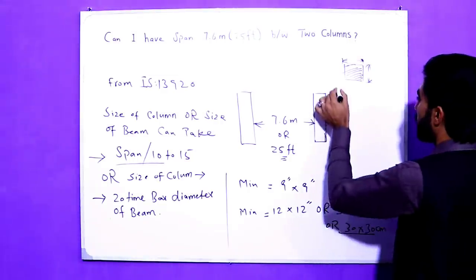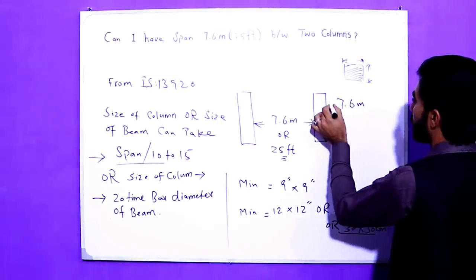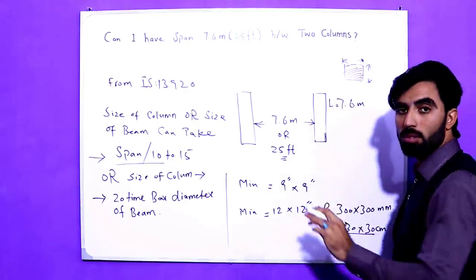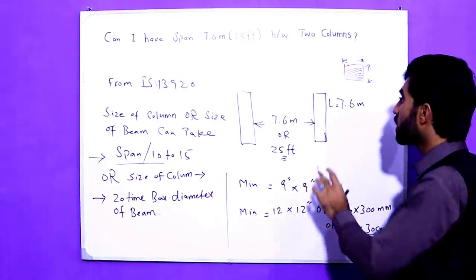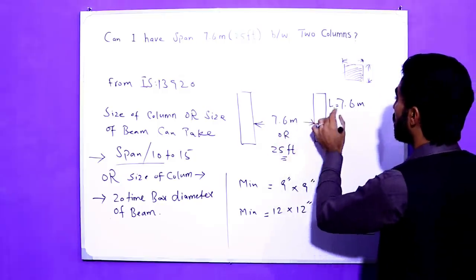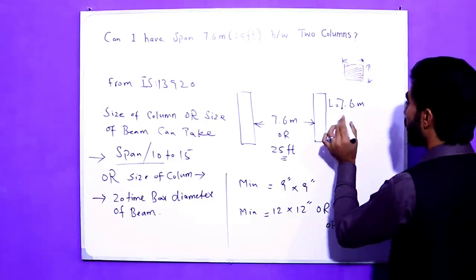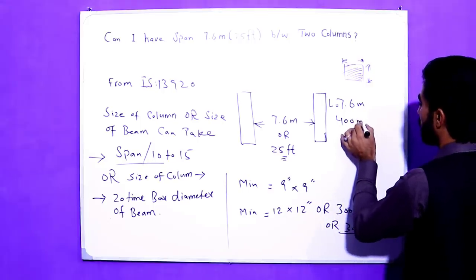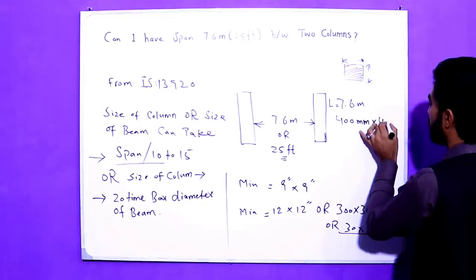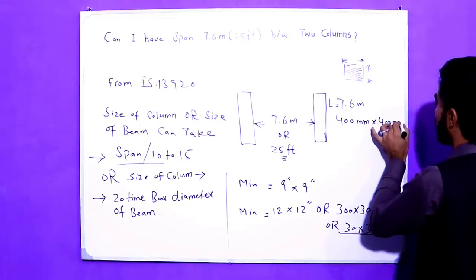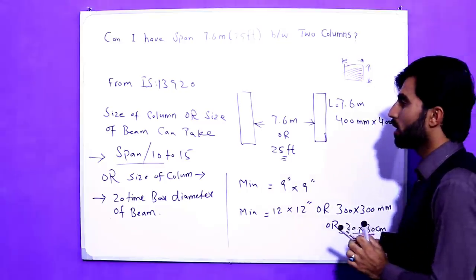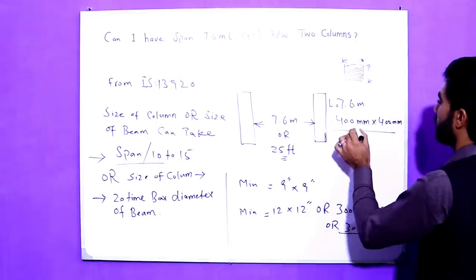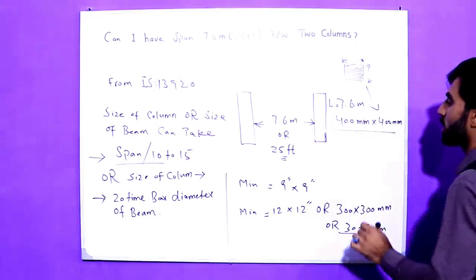If you want to take a span of 7.6 meters, this is the length or span — what should be the size of the column? It should not be less than 400 mm by 400 mm. Now coming to the beam: what should be the depth of the beam? This is the column size.